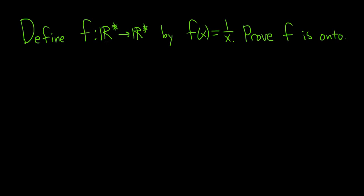So we have a function f, and it's defined from the set of non-zero reals, that's what this symbol means, r star, into the set of non-zero reals, by f of x equals 1 over x. And we're going to prove that f is onto.